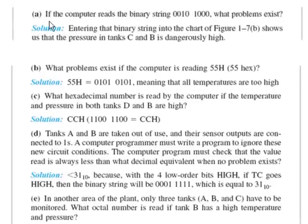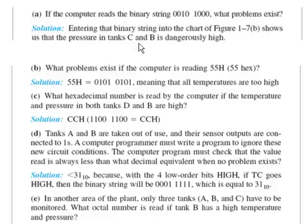The first question: if the computer reads the binary string 0010, what problems exist? Flip back to the chart in figure 7B, and it will show you that tanks C and B have dangerously high pressures. Flip back to that chart and make sure you see that — tanks C and D pressures. What problems exist if the computer is reading 55? Well, 55 in hex looks like this string — that means that all temperatures are high. Flip back and make sure you see that.